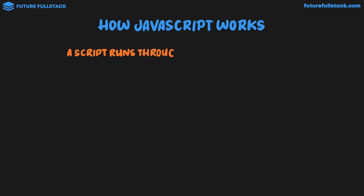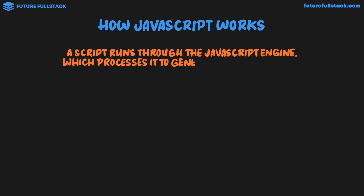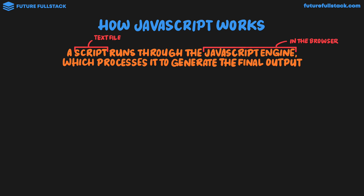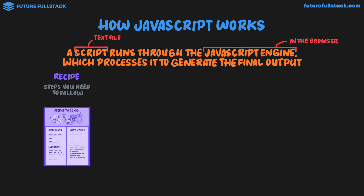A script runs through the JavaScript engine, which processes it to generate the final output. A script is just a text file, and the JavaScript engine is in the browser. So looking at the juice bar analogy, we have a recipe, which are the steps you need to follow to produce the juice. Here's the recipe for the brekkie to go-go juice I like. And in terms of JavaScript, this is the JavaScript script.